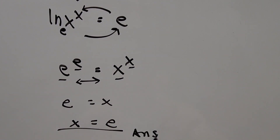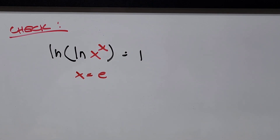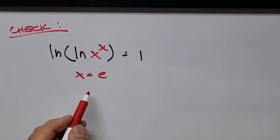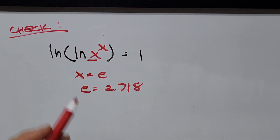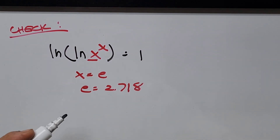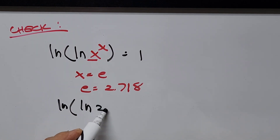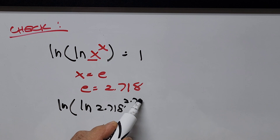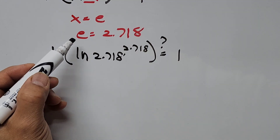Now we have to check our answer by substituting the value of x back into the original equation. The value of x is e, and we take e as approximately 2.718. Substituting into the original equation, we have: natural logarithm of the quantity natural logarithm of 2.718 to the power of 2.718, and this should equal 1.